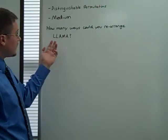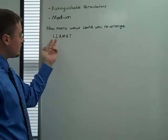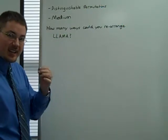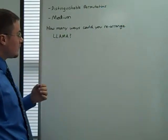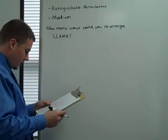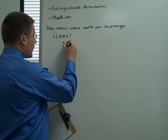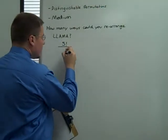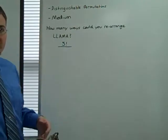But because there are two repetitions, namely two L's and two A's, that's going to cut down on the number of possible outcomes. So we're going to take that first number that we thought of, 5 factorial, and we're going to divide it by the number of repetitious elements.